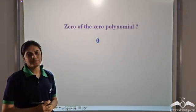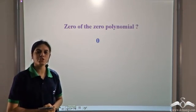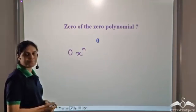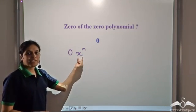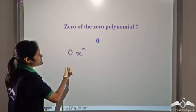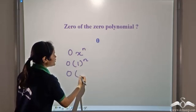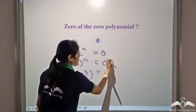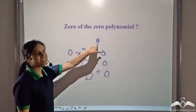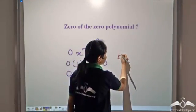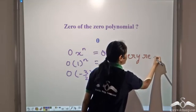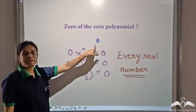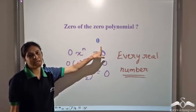What is the zero of the zero polynomial? We can write it as 0 × xⁿ. For any real number x, multiplying by 0 always gives 0. So every real number is a zero of the zero polynomial — it has infinitely many zeros, because every real number satisfies the condition.